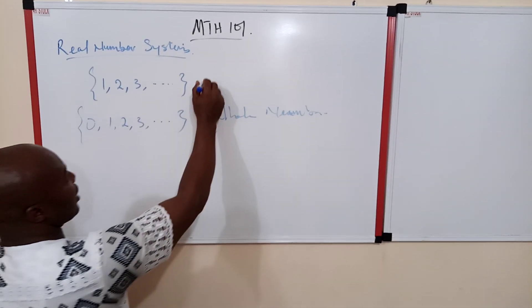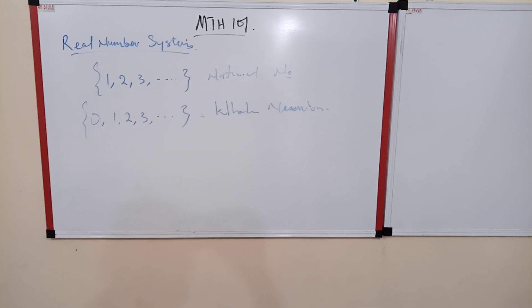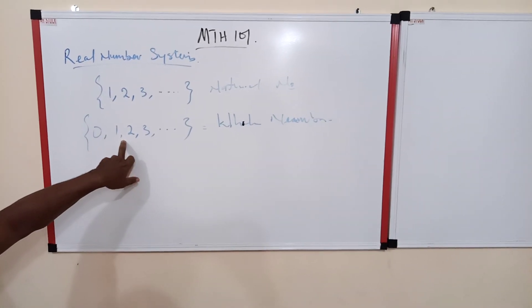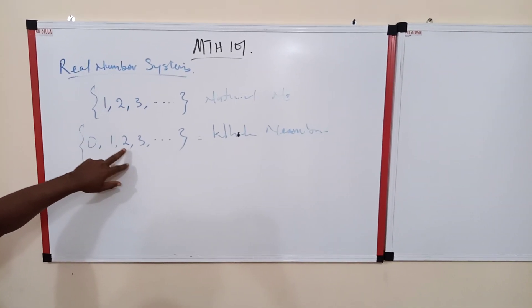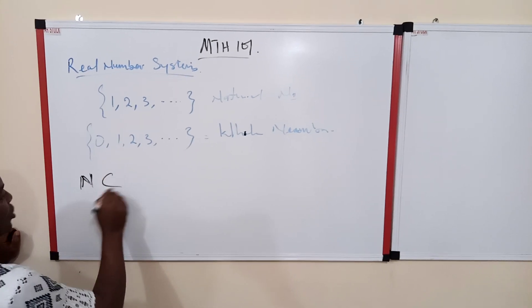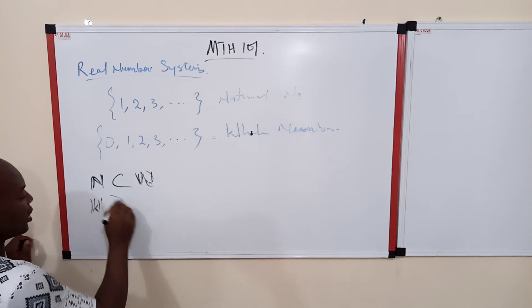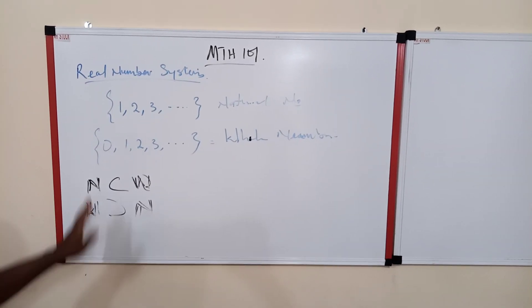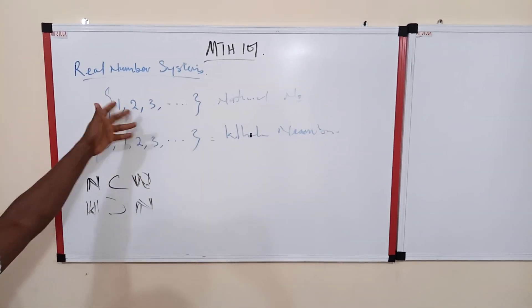So if you look at these two sets, you can see that the set of natural numbers is contained in the set of all whole numbers. In whole numbers, zero is included alongside the set of natural numbers. So we can say the set of natural numbers is a proper subset of the set of whole numbers, or equivalently, the whole number set is a superset of the set of natural numbers. Natural numbers are just the counting numbers, while whole numbers also include zero.